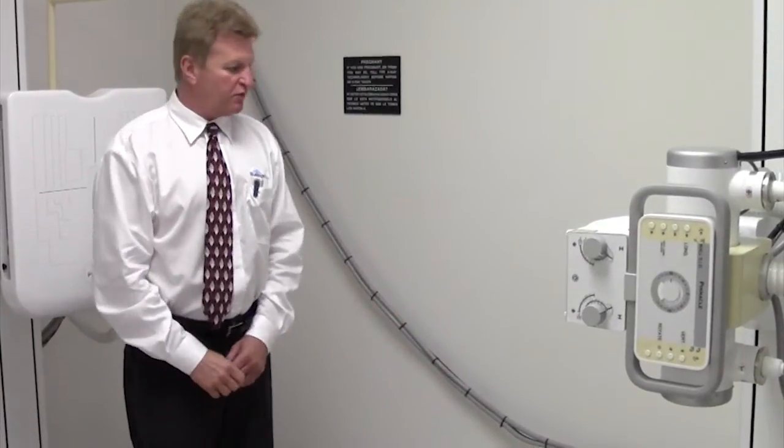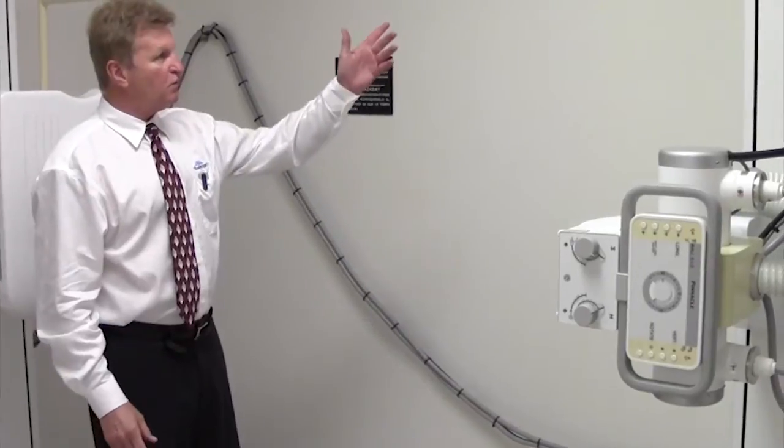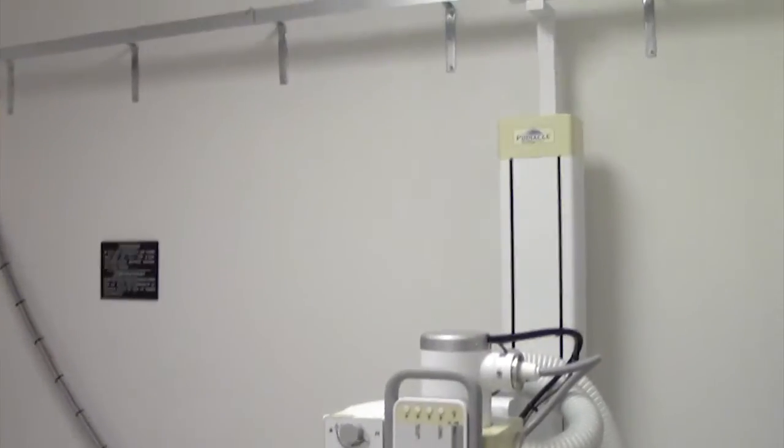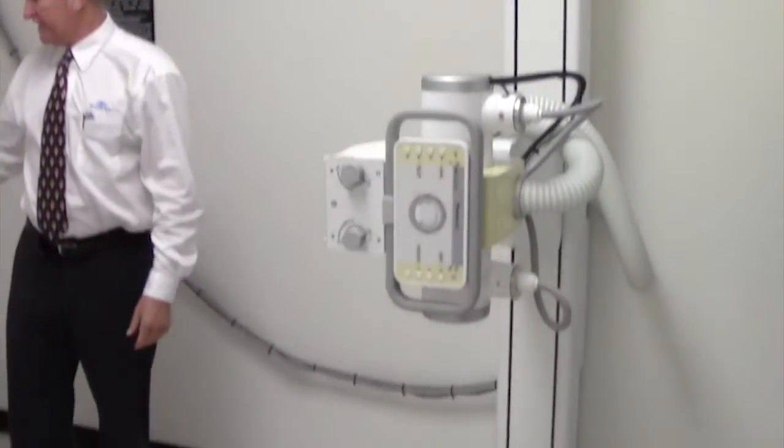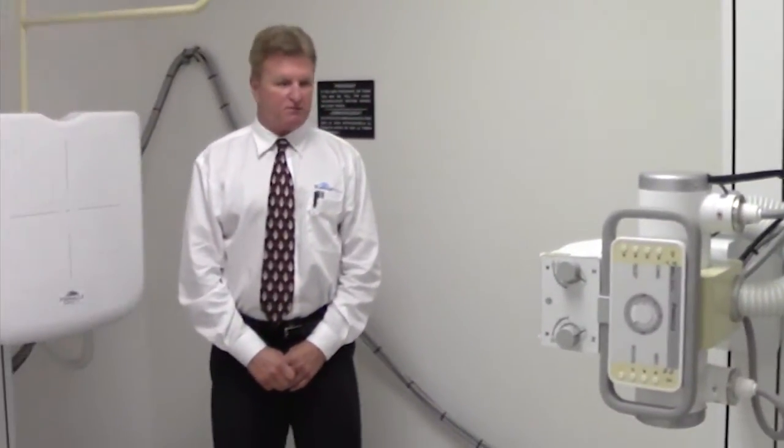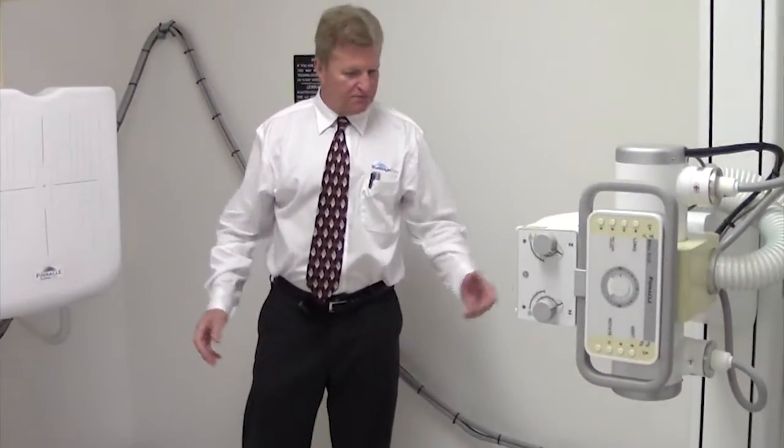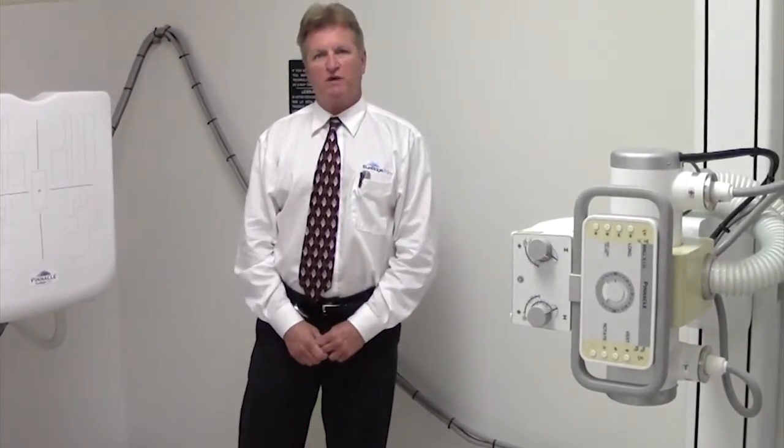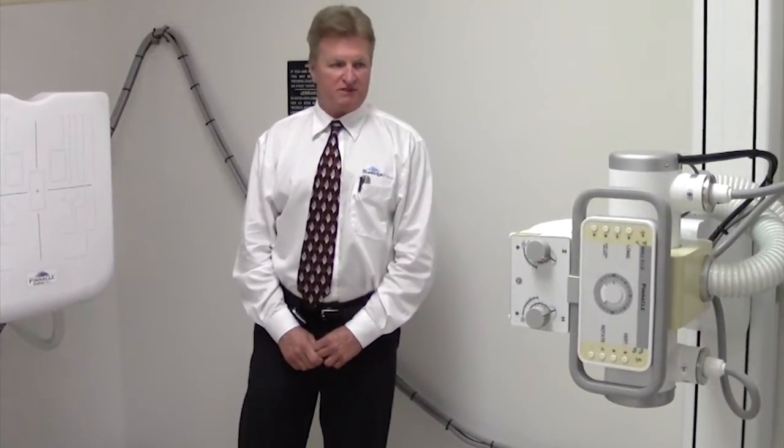It can go in a very small space and you'll notice that the floor-to-wall tube stand and the floor-mounted tilting wall stand are independent of one another. That gives the flexibility of doing certain images as well as being installed in smaller spaces.